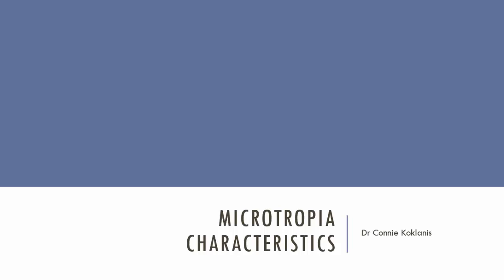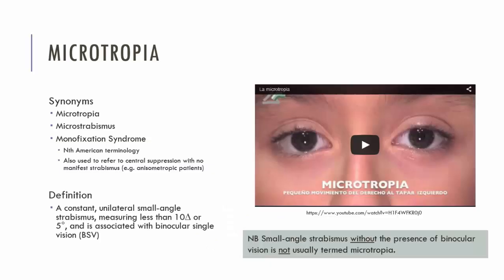My name is Clinical Partners and you're watching the video on the characteristics of microtropia. Microtropia is a small angle strabismus that generally measures less than 10 prism diopters, so it's about 5 degrees or less, and despite the patient having a manifest strabismus, the patient still has BSV.